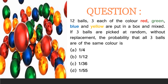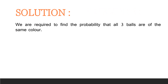12 balls, 3 each of the colors red, green, blue and yellow are put in a box and mixed. If 3 balls are picked at random without replacement, the probability that all 3 balls are of the same color is: option a) 1/4, option b) 1/12, option c) 1/36, and option d) 1/55.